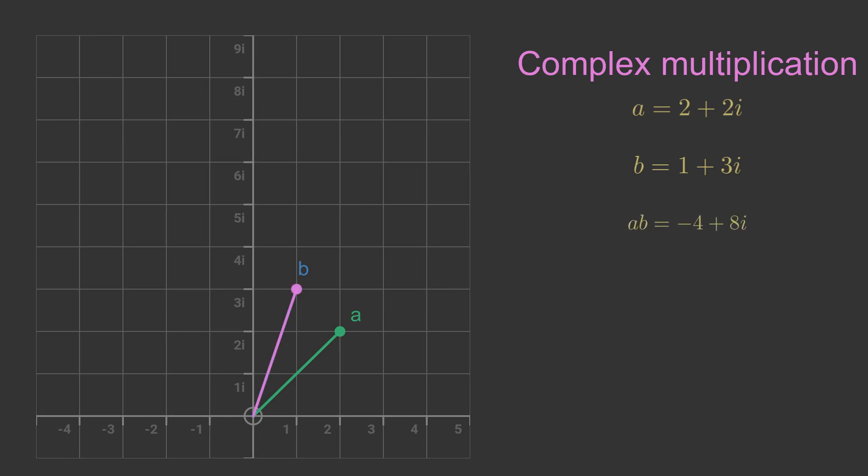If we multiply a by b, the result is minus 4 plus 8i. We will look at this calculation in a moment. The new point ab is further away from the origin, and it is also rotated relative to the point b.